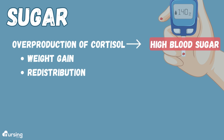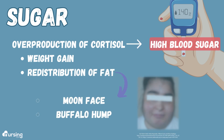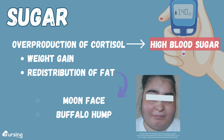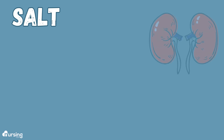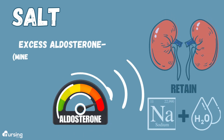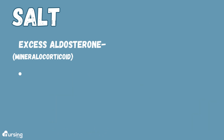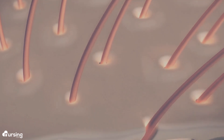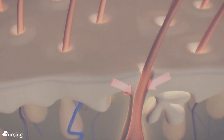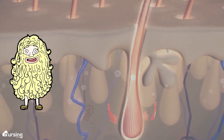This causes weight gain and redistribution of fat, resulting in hallmark physical findings like moon face or the formation of a buffalo hump. In regards to the salt component, there's excess mineralocorticoid aldosterone, which signals the kidneys to retain sodium and water, resulting in hypertension. Symptoms in these Cushing's patients can actually appear like those of heart failure patients. An imbalance of the androgens or sex hormones can result in excess hair growth and affects the integrity of the skin.